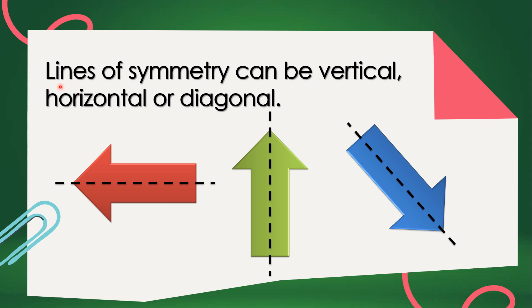When we say lines of symmetry, it can be vertical, this one, or horizontal, this one, or diagonal, this one. Again, lines of symmetry can be vertical, horizontal, or diagonal.